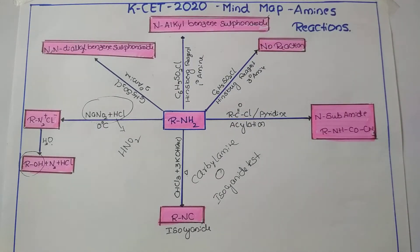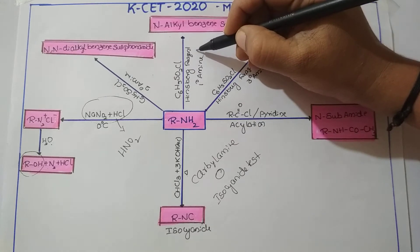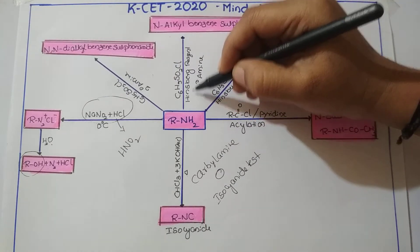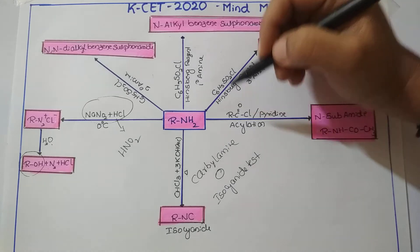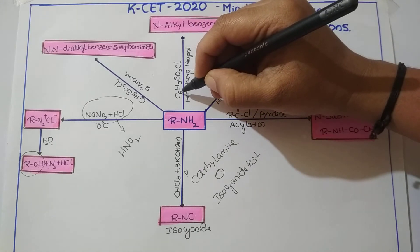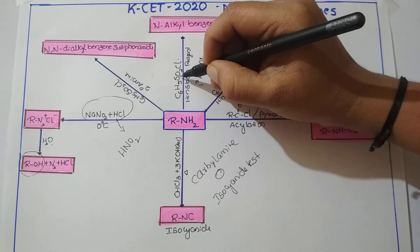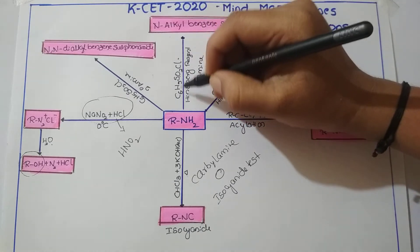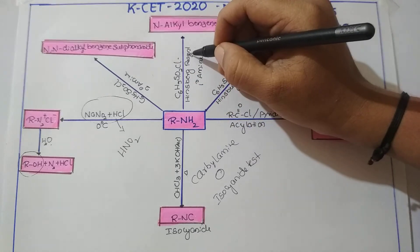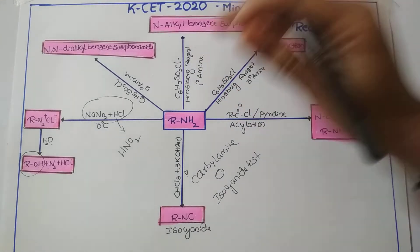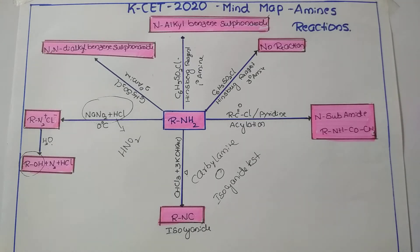The next reaction is the Hinsberg reaction, and the reagent used is benzene sulfonyl chloride, known as the Hinsberg reagent. This test is used to distinguish between primary, secondary, and tertiary amines.